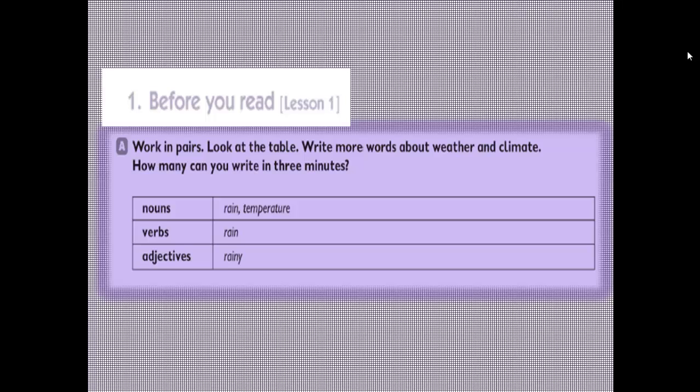This table consists of three parts: the first one relating to nouns, the second one with verbs, and the last one with adjectives. Under these three titles we want to write some words related to weather and climate within three minutes.